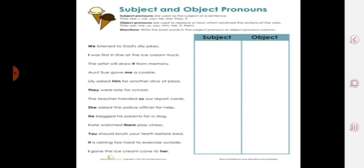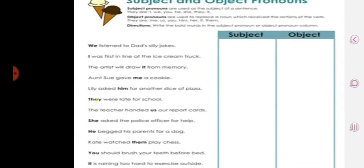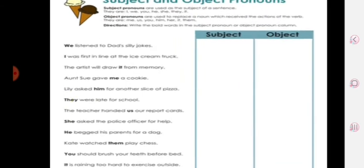Here's what you have to do: write the bold words in the subject pronoun or object pronoun column. So here you have to check whether that bold word—like here it is 'we listened to daddy's silly jokes'—you have to find out if 'we' is a subject pronoun or object pronoun.